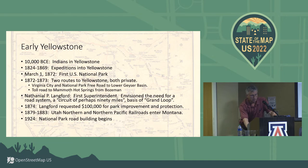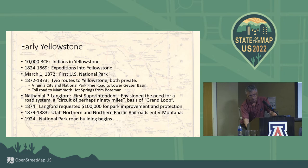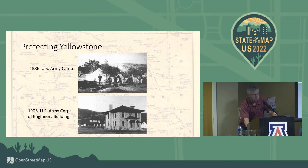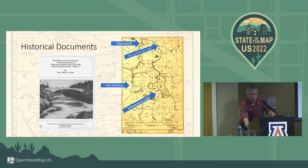Yellowstone was founded 150 years ago. The first superintendent, Langford, in 1874 requested a budget of $100,000 to build roads and maintain the park — that was turned down. So when you don't have money to build roads and patrol the park, you send in the army. The Army Corps of Engineers built buildings there, and US Army soldiers had a camp, pretty much taking care of the park for a couple of decades.